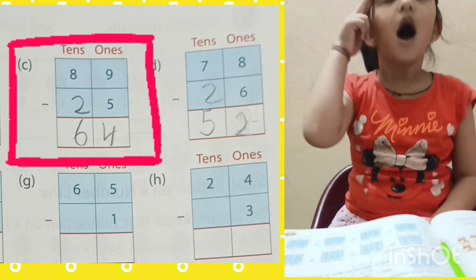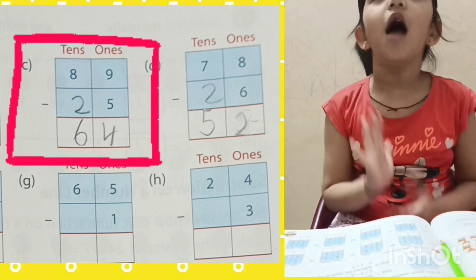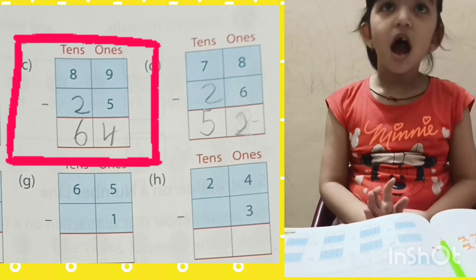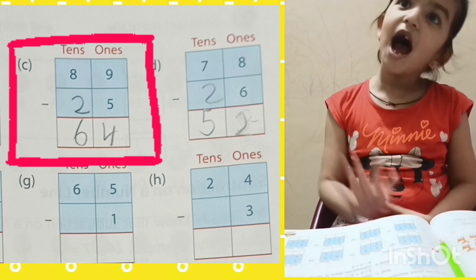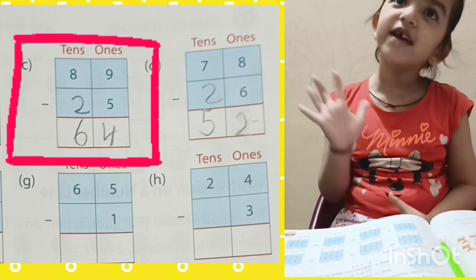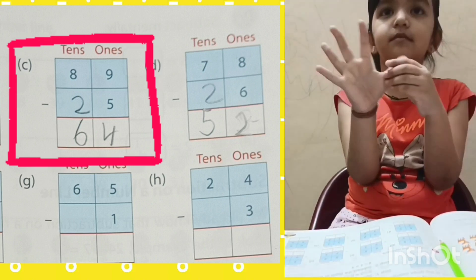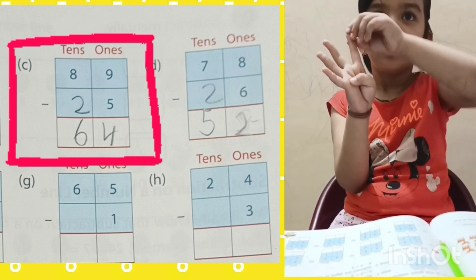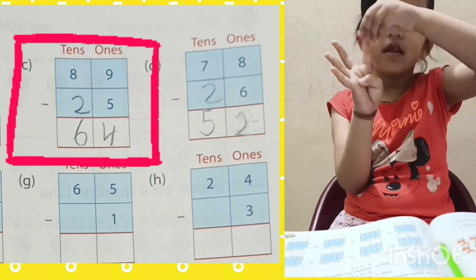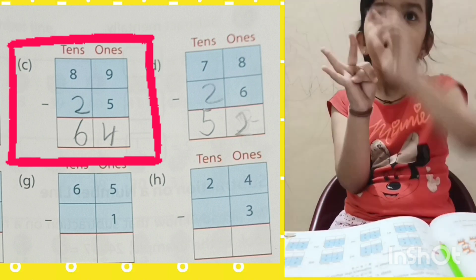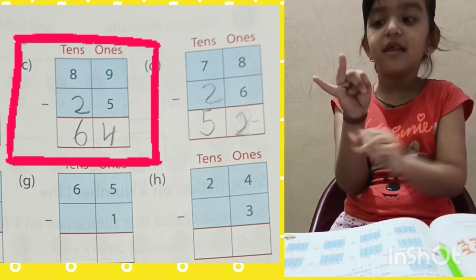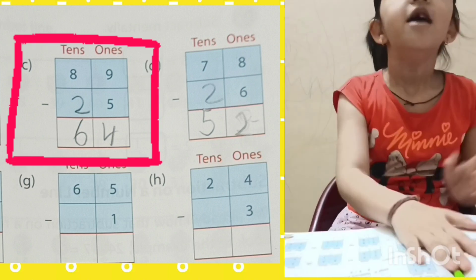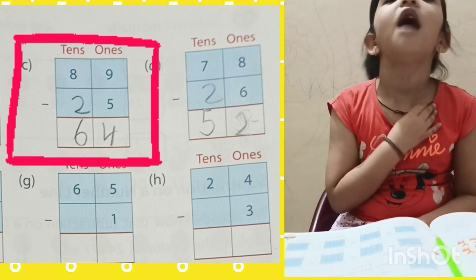Nine in my mind, five in my fingers, back counting nine: eight, seven, six, five, four. Four is my answer.